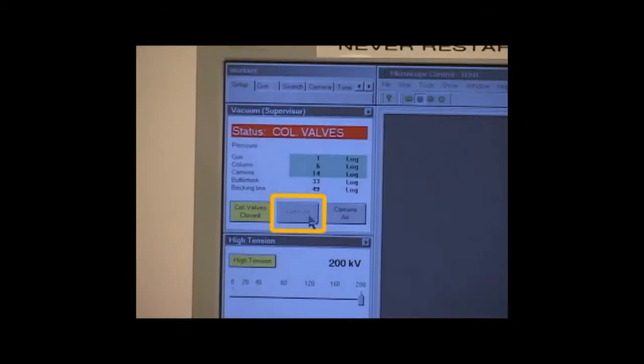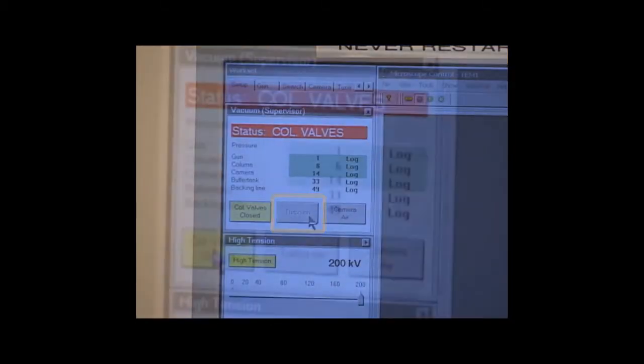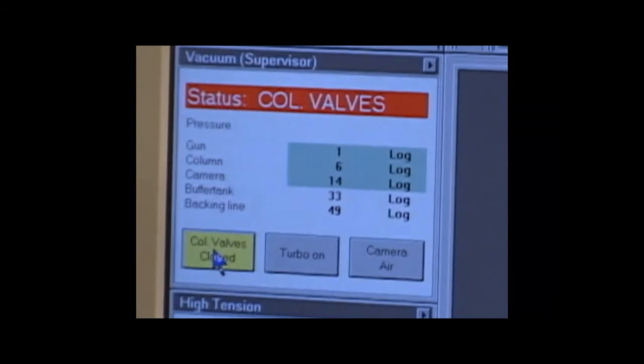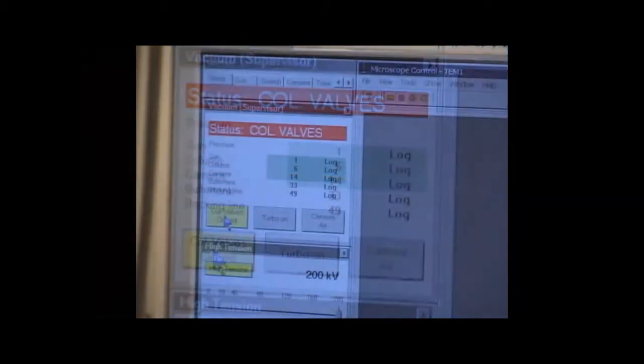When the light goes out, and the airlock status changes to Column Valves, the sample chamber has been evacuated. Now, turn the holder counterclockwise and hold it as the vacuum sucks the holder slowly in. Now, turn off the Turbo Pump. After the holder has been inserted, the vacuum in column should read 6, and you can start to adjust the beam. Click the Column Valves Closed, and the button changes from yellow to gray, and the status reads Ready.